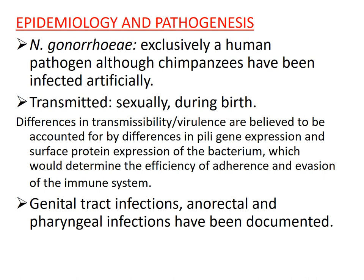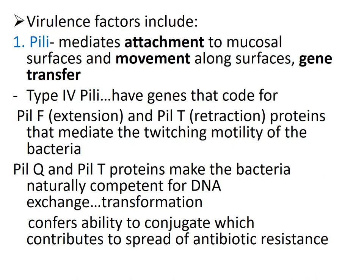Virulence factors of Neisseria gonorrhoeae include, first, the pili, which mediate attachment to mucosal cell surfaces. Some pili facilitate twitching motility — movement along surfaces. The type 4 pili found in Neisseria gonorrhoeae have genes coding for extension and retraction proteins that mediate twitching motility. This bacteria does not have a flagellum, but it has this mode of movement called twitching motility due to these extension and retraction proteins.